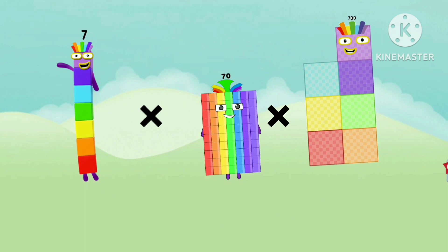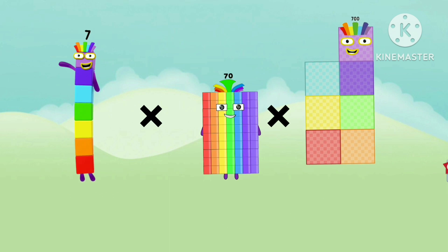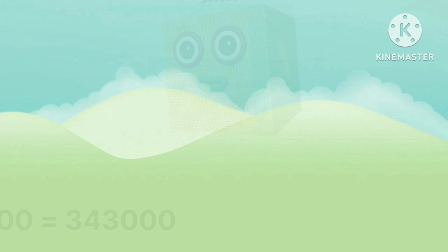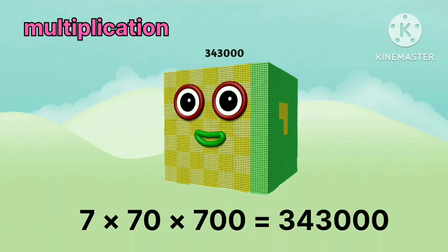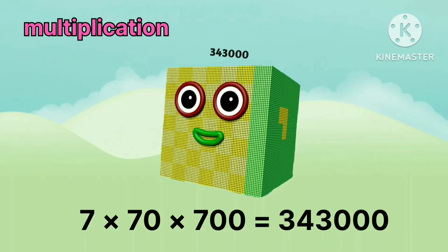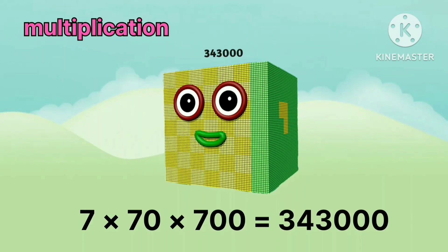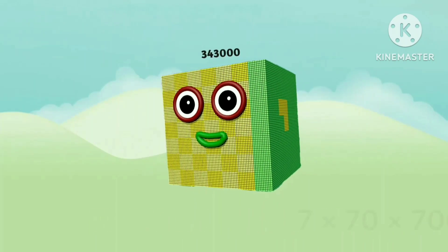7. Multiply by 70. Multiply by 700. Equals 3 lakhs 43000.